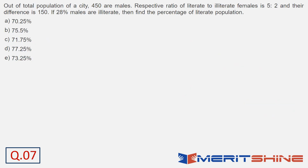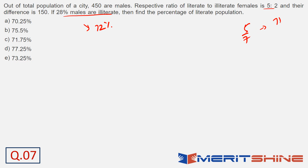Question number 7. If you look at the options, this is an absolute sitter. 28% of males are illiterate, so literate males are 72%. For females, literate proportion is 5 upon 7. What is 5 upon 7? It is 1 minus 2 upon 7. Now 2 upon 7 is approximately 28.5%, so literate females are approximately 71.5%. The answer has to be between 71.5% and 72% — the only possibility is option C.